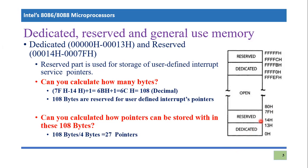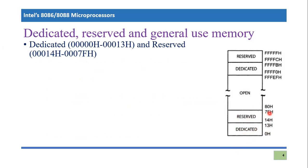So in total, how many pointers? 32 pointers. So you can actually say that this portion, dedicated and reserved memory, this lower portion from 00000H to 0007FH, in total, they have 32 pointers. Let's go and move to the next dedicated portion. I'm just leaving this open space and we will discuss it.